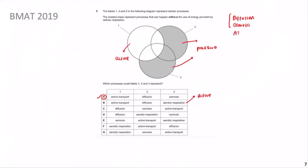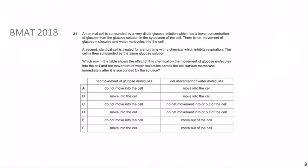In the previous section we covered BMAT 2019 Question 5, which was relatively straightforward. Now we move to BMAT 2018 Question 21, which is towards the end of the paper so expect it to be harder. The question describes an animal cell surrounded by a very dilute glucose solution, which has a lower concentration of glucose than the cytoplasm. Draw a beaker with an oval animal cell: inside the cell is high glucose concentration, outside is low glucose solution with a lot of water.